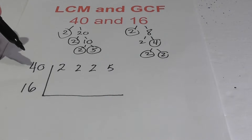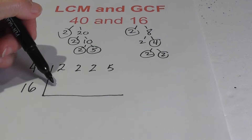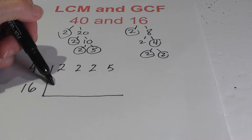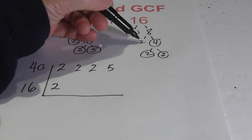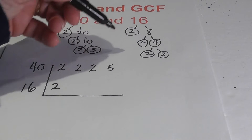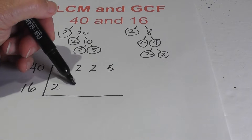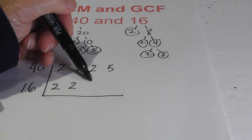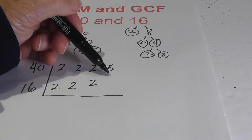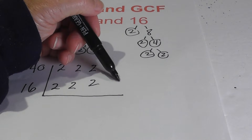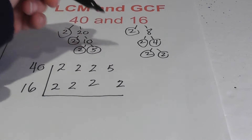And then on the other side for 16 let's go 2 — I forgot to circle this one — 2, and then I'm going to skip the 5, and then 2.